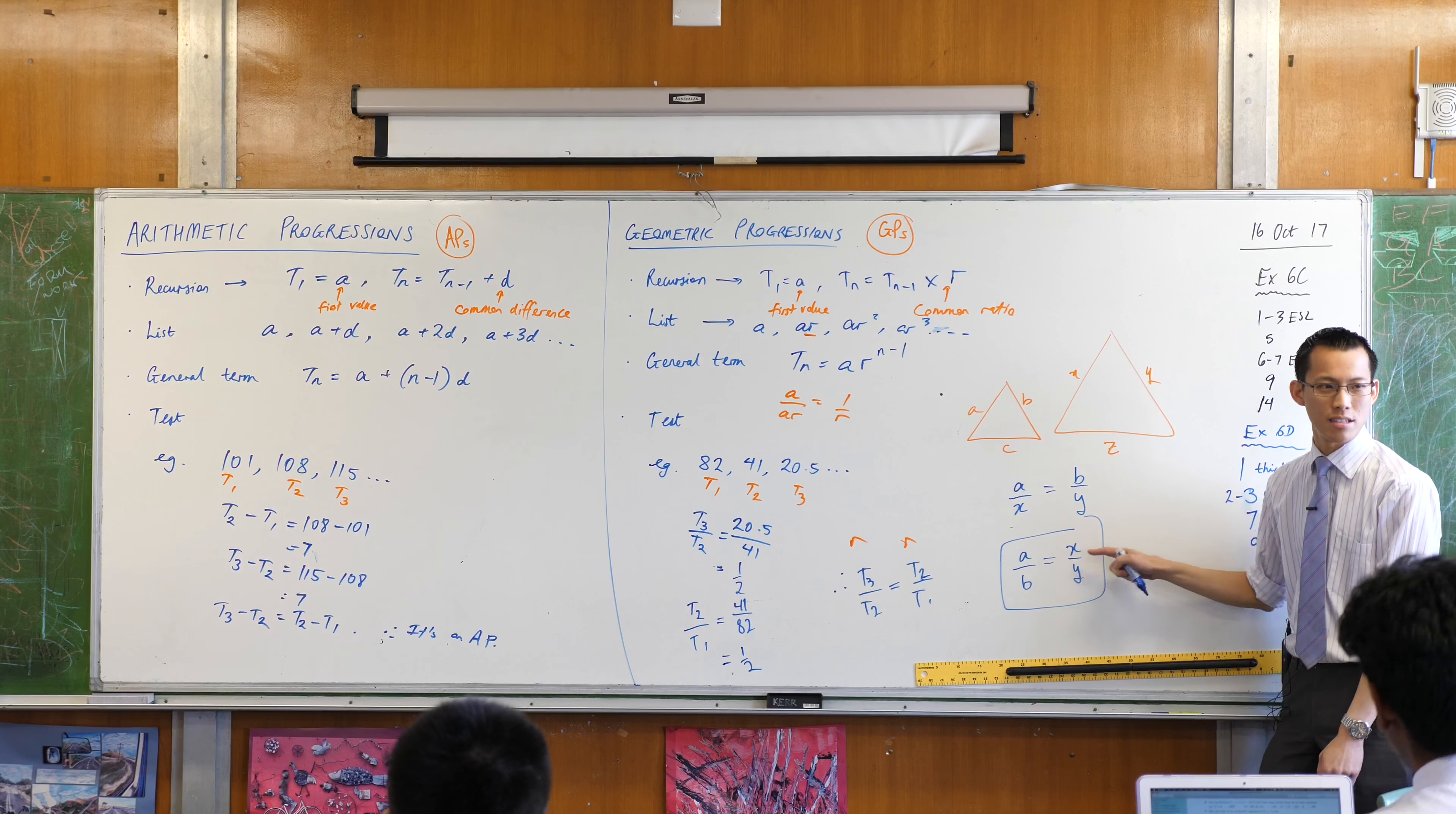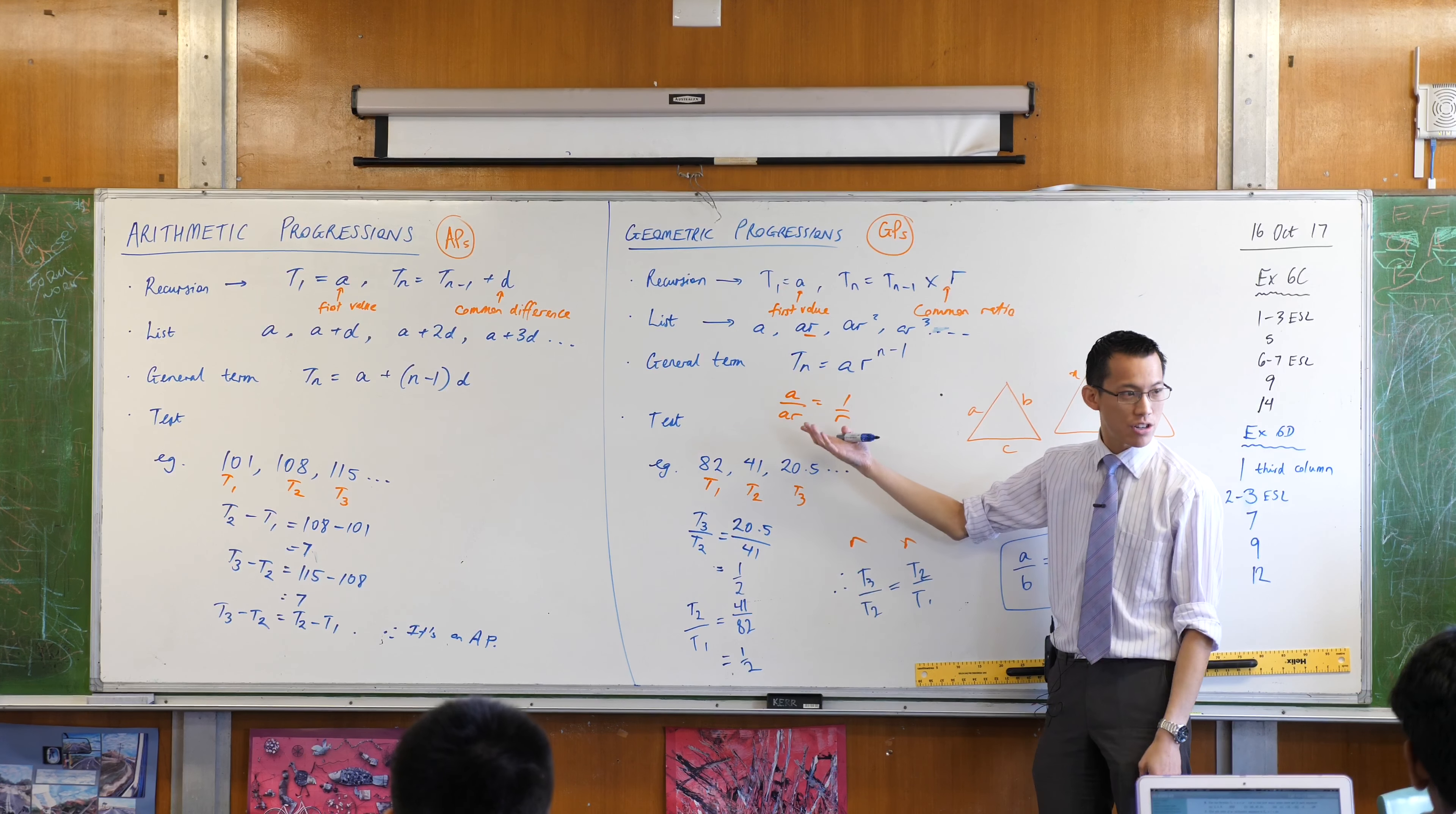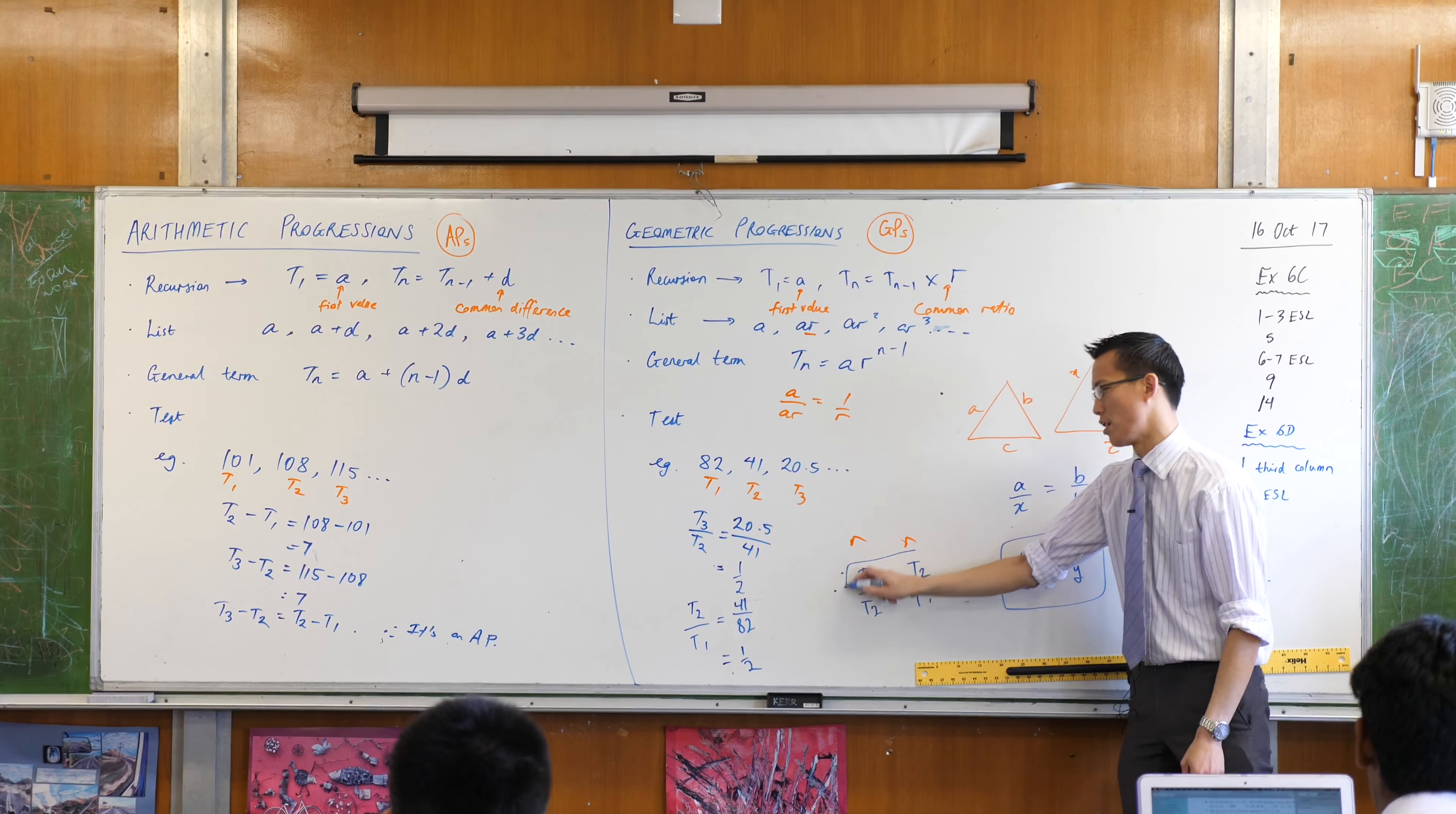These are not corresponding sides in similar triangles. Any more than this is the common ratio. So, even though numerically it ends up being the same, I think you should put it in the right order.